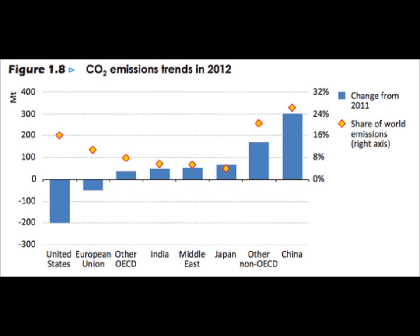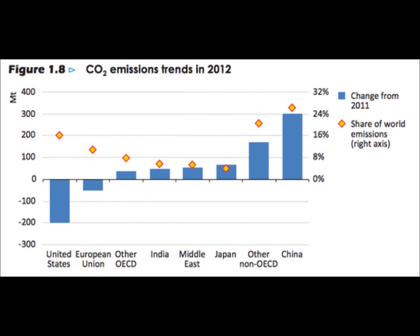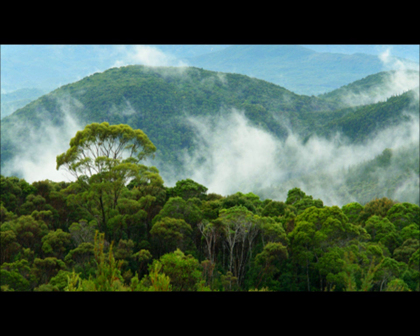The formation of the BASIC block reflects a change in the traditional division of the parties into the Global North — the richer and developed countries — and the Global South — the poorer and developing countries — or Annex 1 and non-Annex 1 countries as it was set out in the Kyoto Protocol.